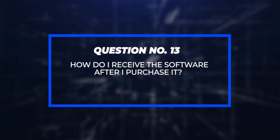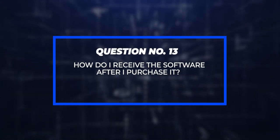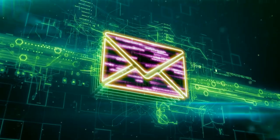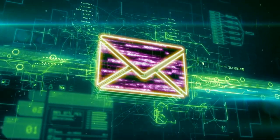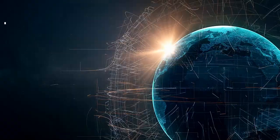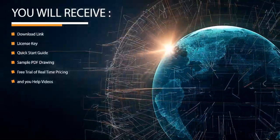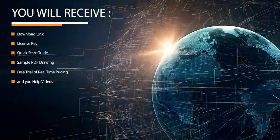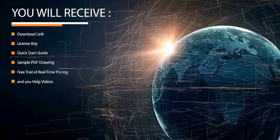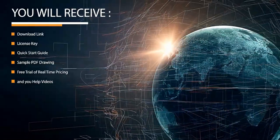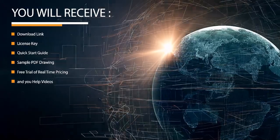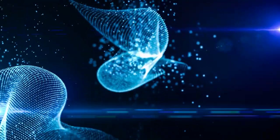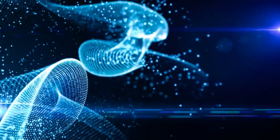Question 13: How do I receive the software after I purchase it? The software will come the same day via email. You will receive your download link, license key, quick start guide, sample PDF drawing, free trial of Real-Time Pricing, and your help videos. These should be stored in a safe place for future use.